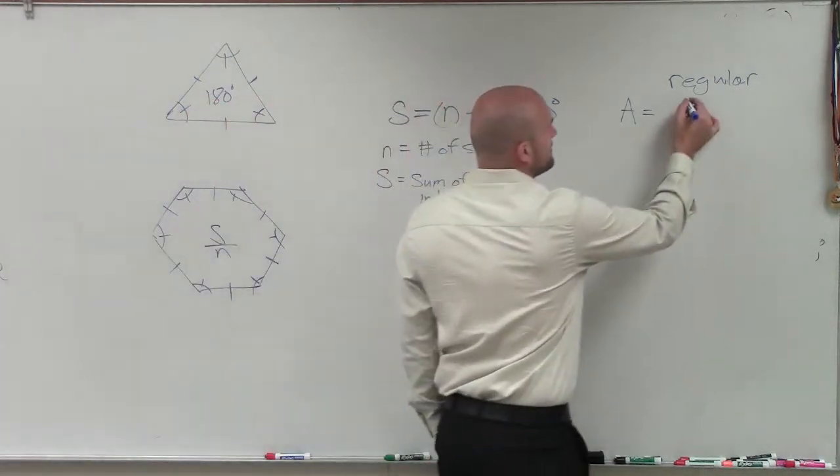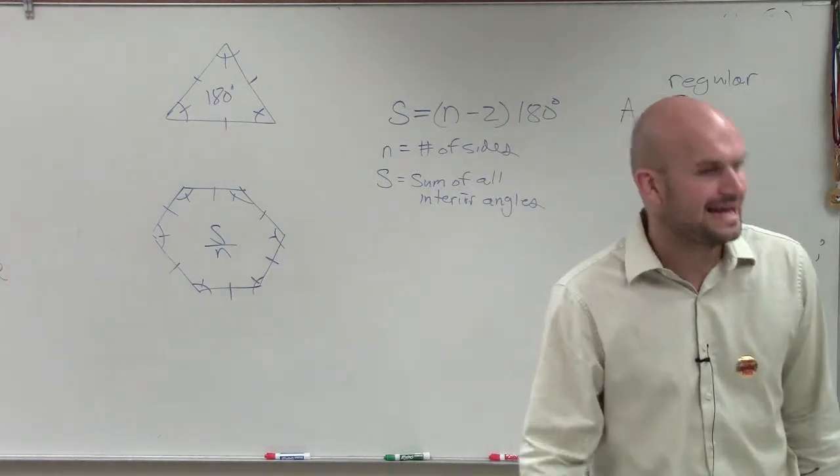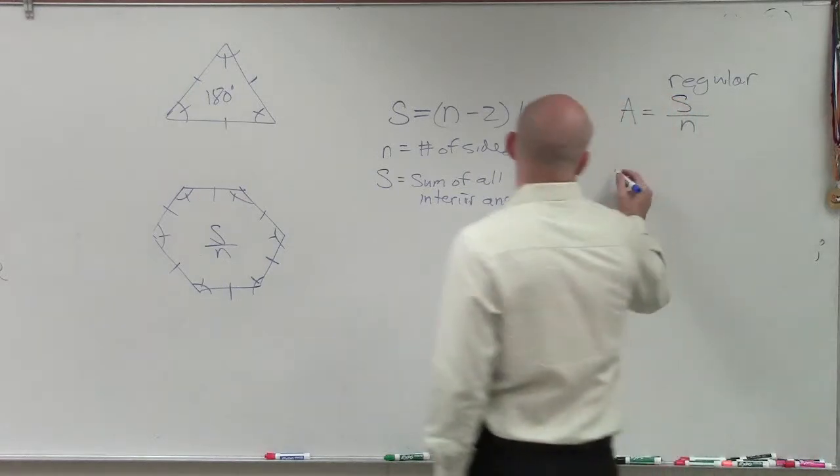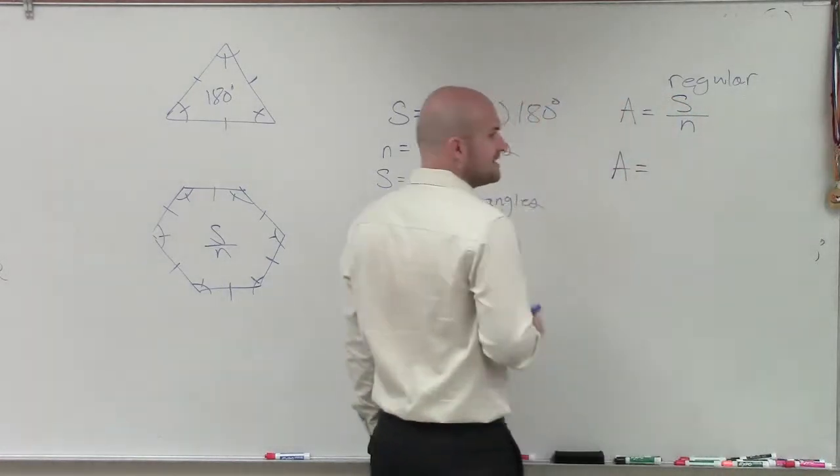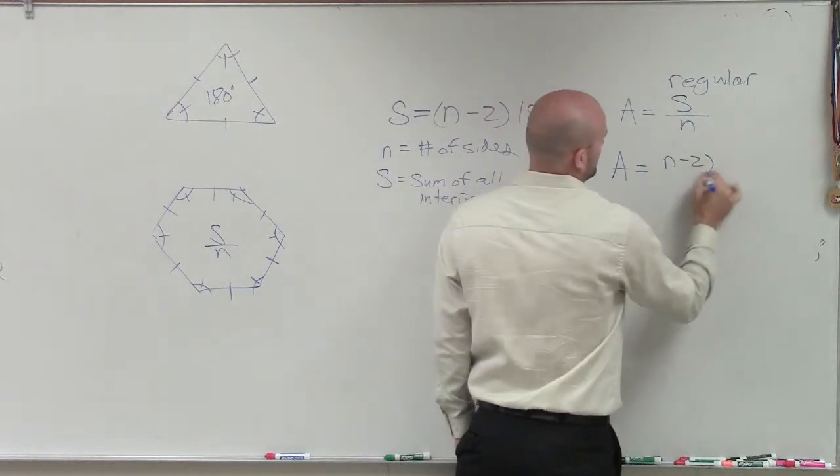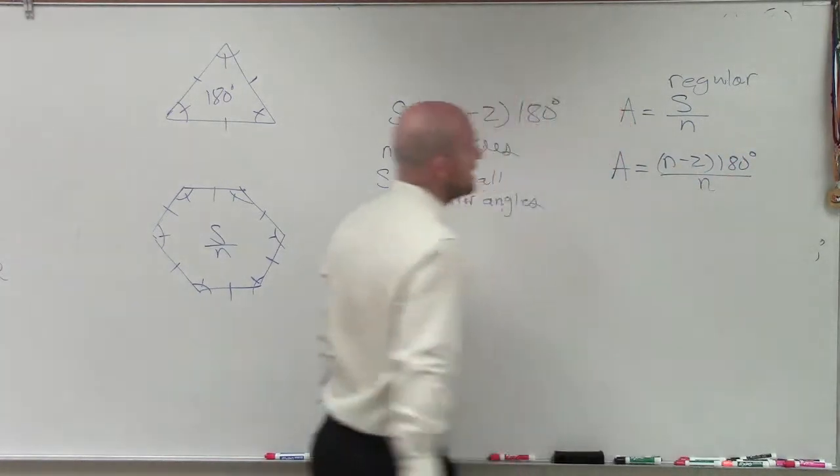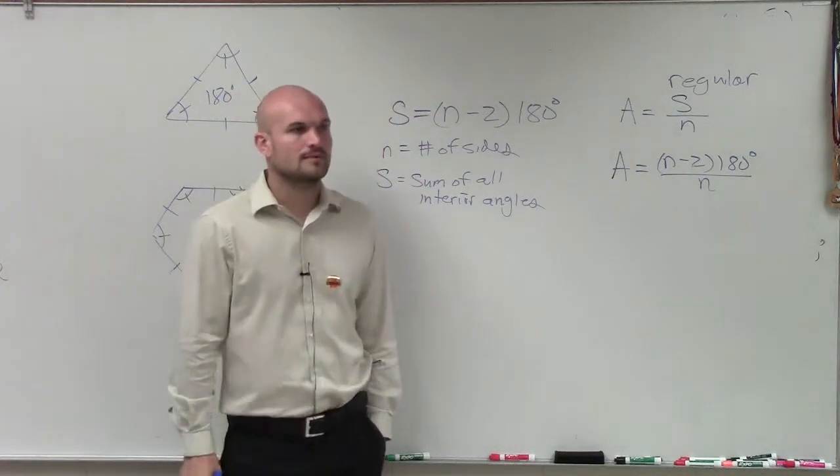So if I wanted to find the measure of one angle, I take the sum and divide it by n. Easier written, it looks like this. The sum is what? n minus 2 times 180. And that's all over n.